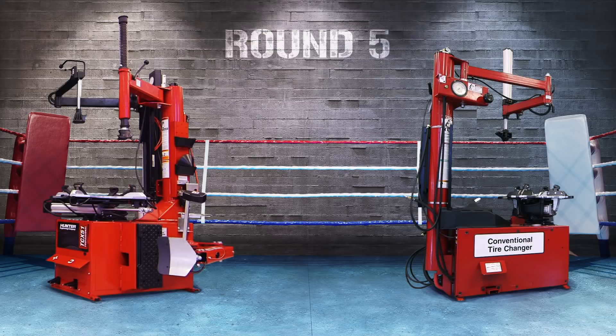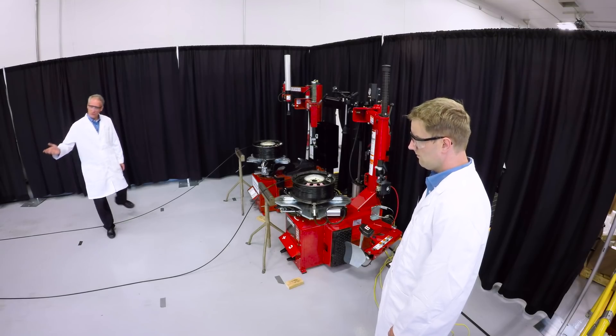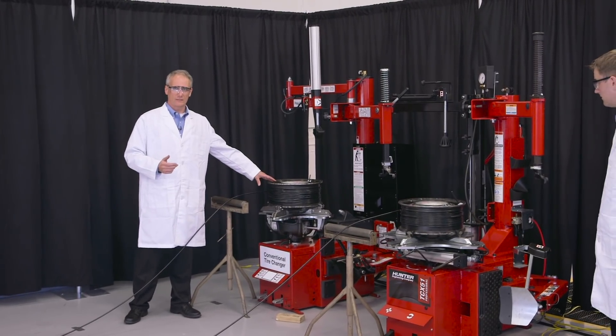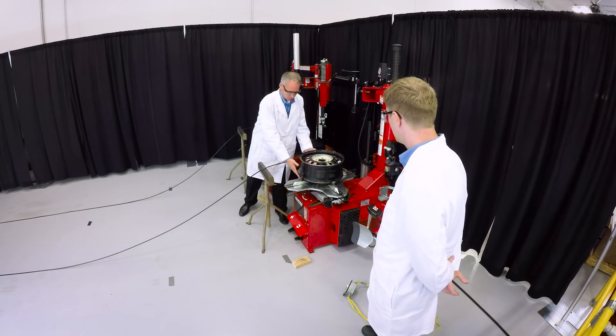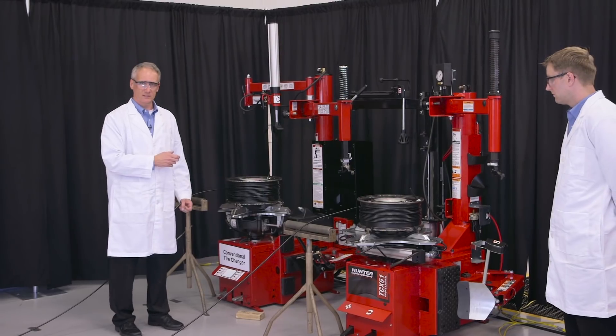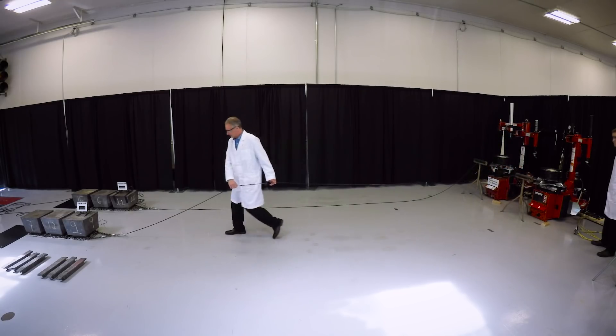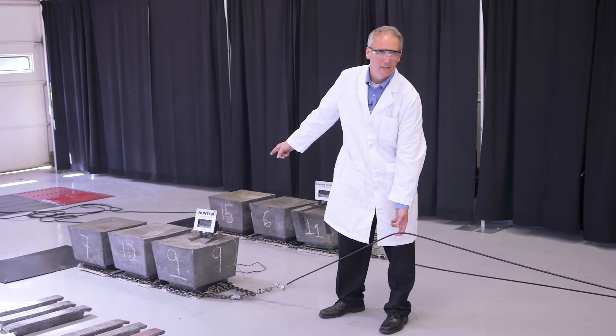One of the most important performance characteristics of a tabletop tire changer is torque, so we're going to do a torque comparison. To do this we're going to use a setup that's very similar to the way the tire changer might operate. We're going to clamp a wheel to the tabletop and rotate that wheel with some resistance. So what we've done is put a cable on here to a load.